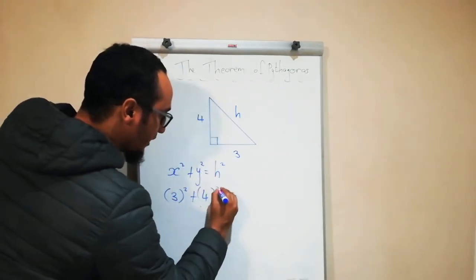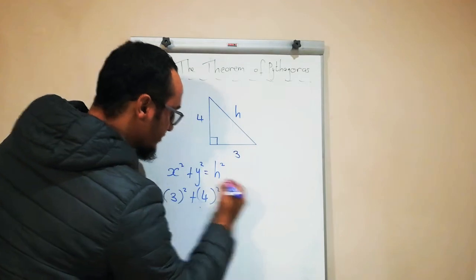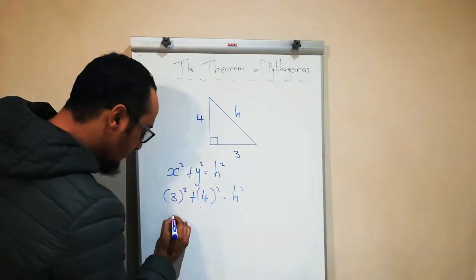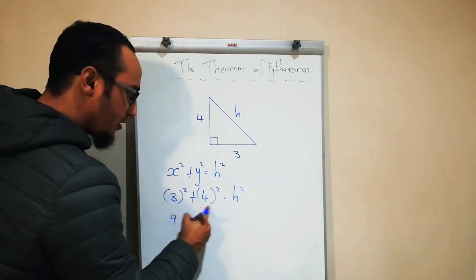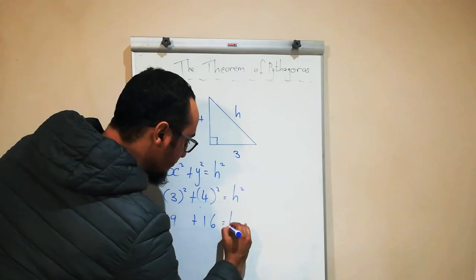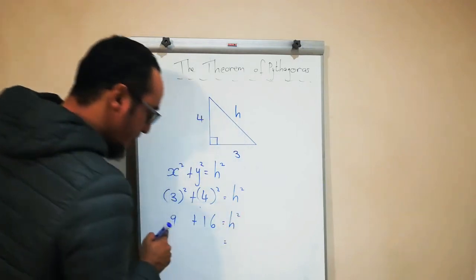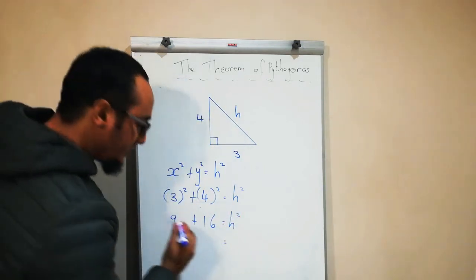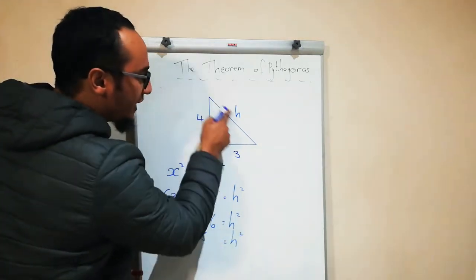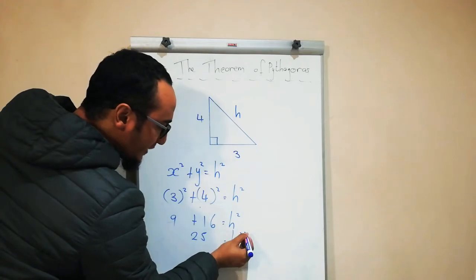So three squared—three multiplied by three is nine—plus four squared—four multiplied by four is sixteen—equals h squared. Nine plus sixteen equals twenty-five.